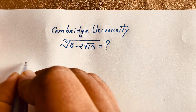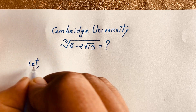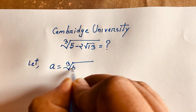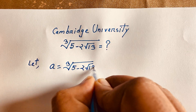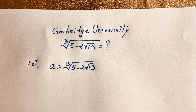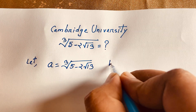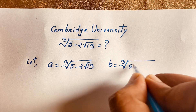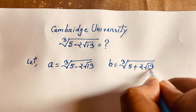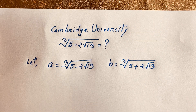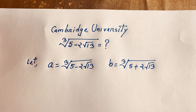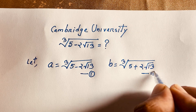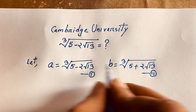First of all, let a equal to cube root of (5 minus 2 square root 13). And let b equal to cube root of (5 plus 2 square root 13). This is our first equation and this is our second equation.